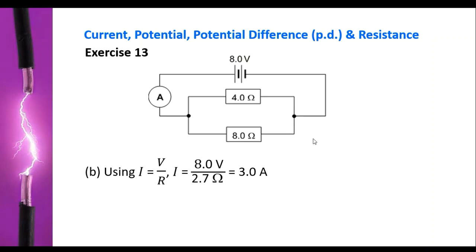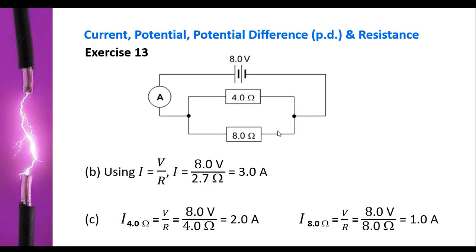In part C, we determine the current through each resistor. Using the potential difference of 8.0 volts across each resistor divided by its resistance: for the 4.0 ohm resistor, we get a current of 2.0 ampere; for the 8.0 ohm resistor, we get a current of 1.0 ampere. This is reasonable because the current through the 4.0 ohm resistor is double that of the 8.0 ohm resistor, and the sum of these two currents gives 3.0 ampere.